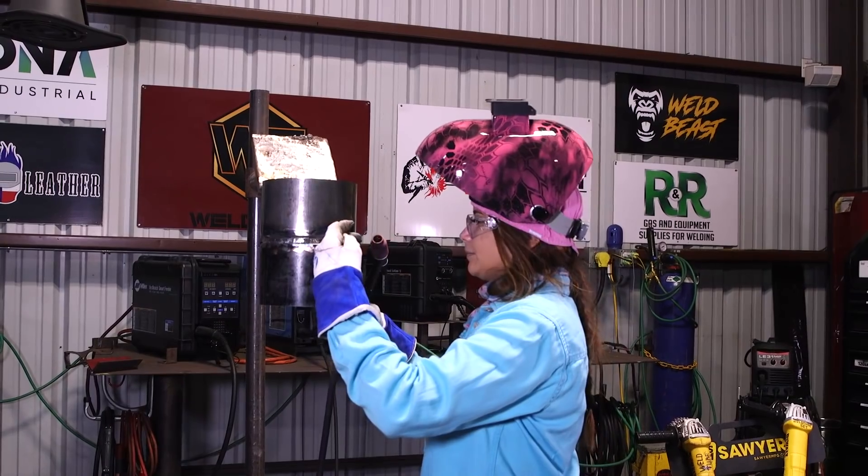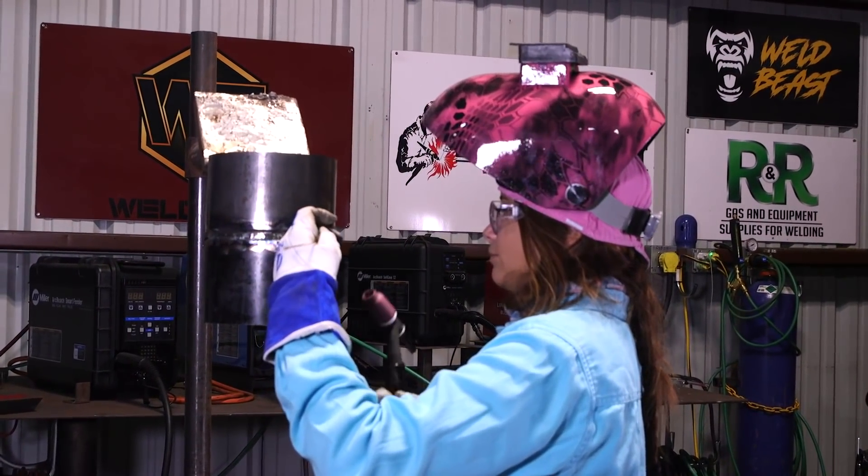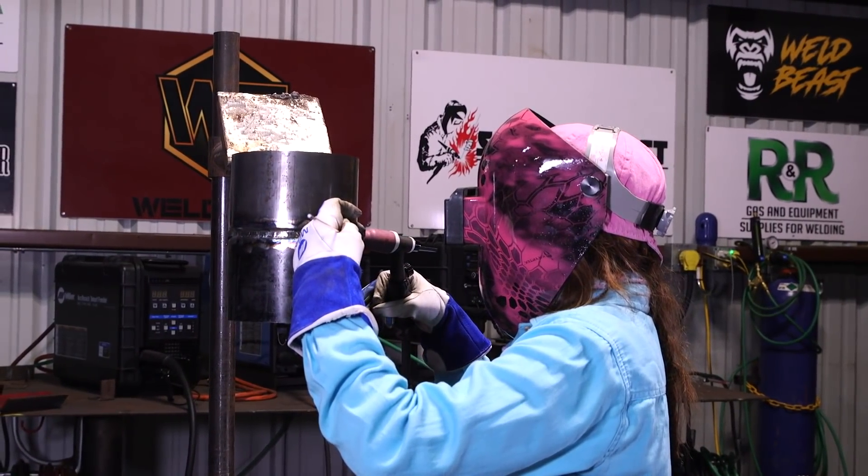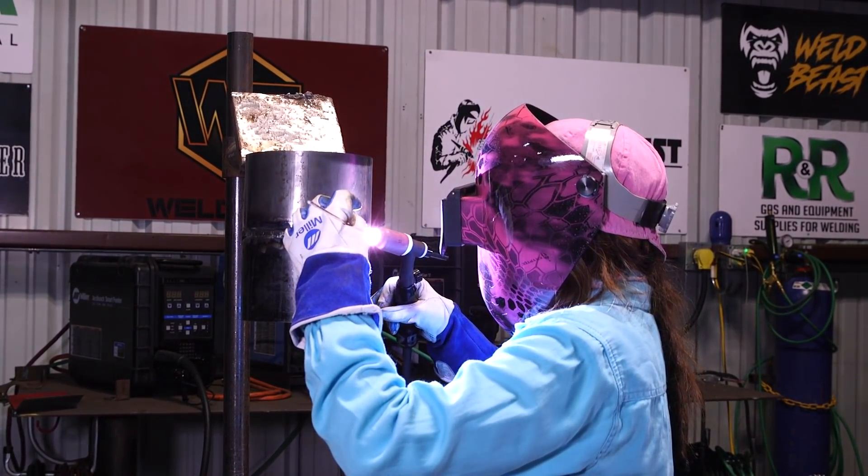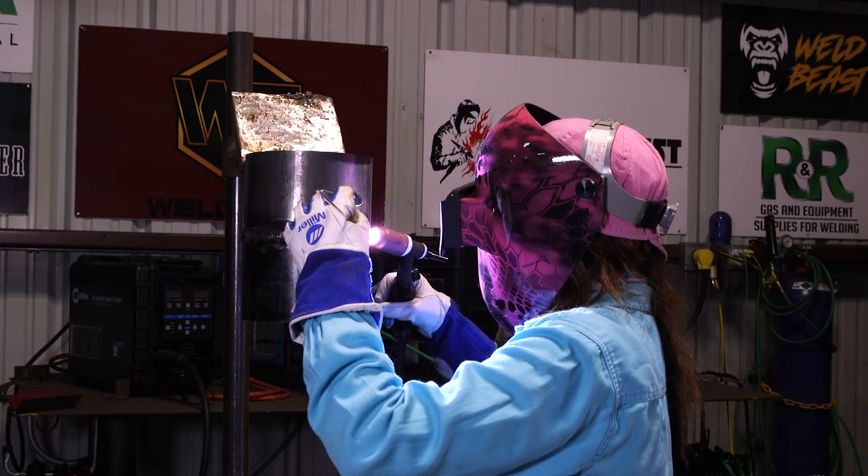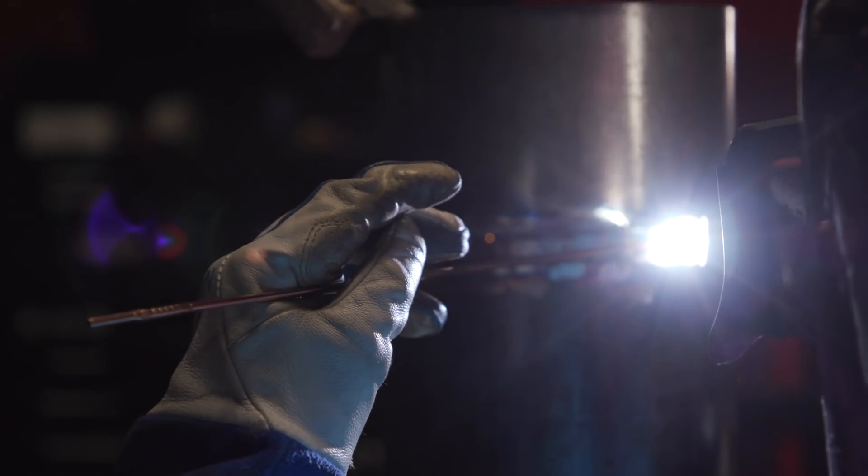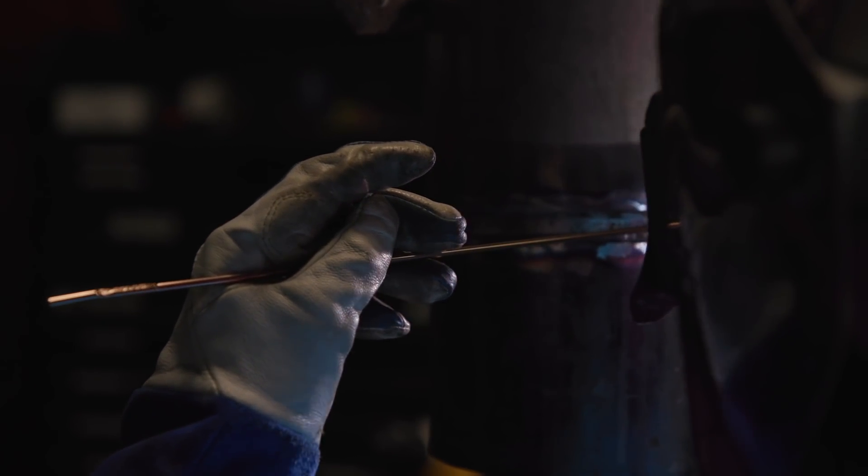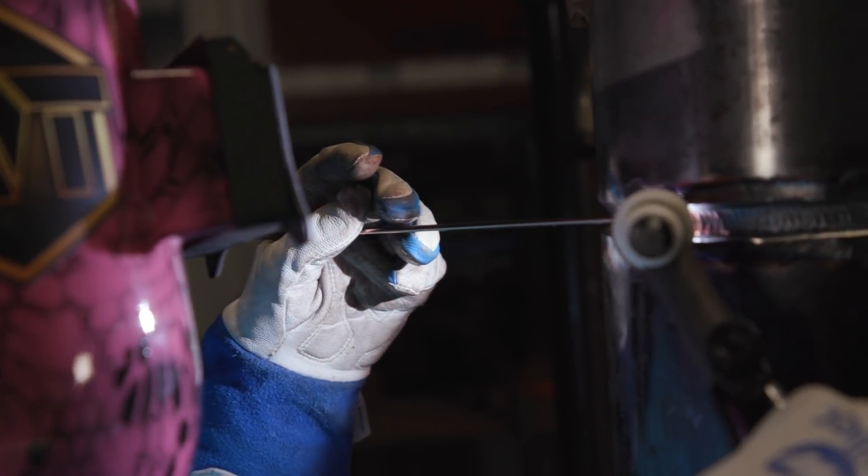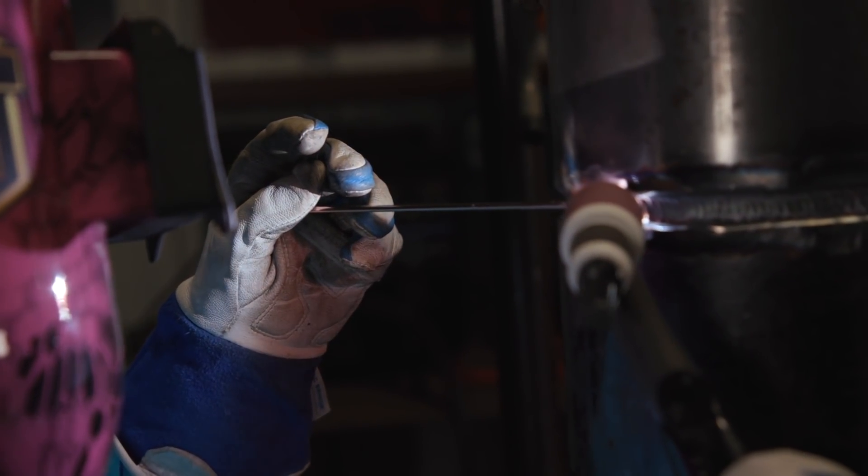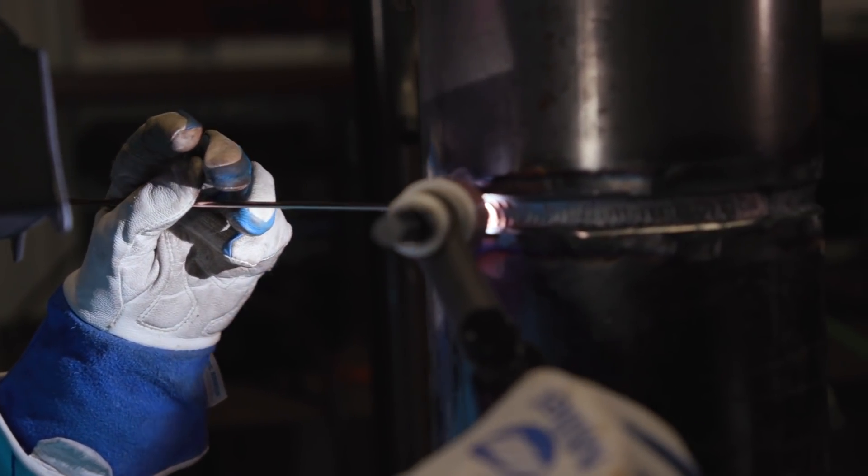So, here it goes. I'm going to keep my wire at the top of the puddle and just wiggle up and down, up and down. From the top of the bevel to the bottom of the bevel. There we go.